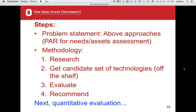The steps to this process are: first, get the problem statement using participatory action research and needs and assets assessment. Then do research to figure out what technologies are available and get a candidate set of off-the-shelf technologies — this might be two, three, or up to ten technologies. Next, evaluate those technologies and make a recommendation. We'll focus on steps three and four — how to evaluate and recommend in a quantitative way.